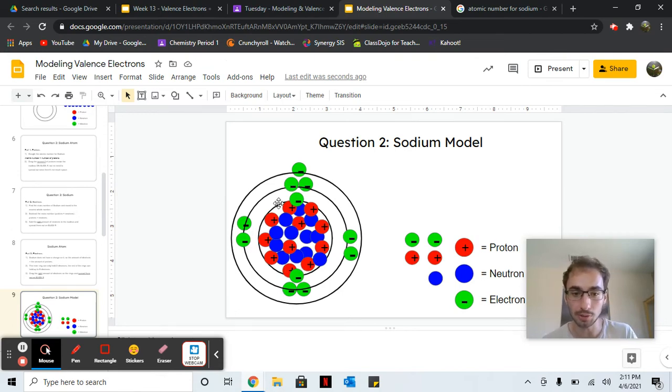You can double check: two, four, six, eight, ten, eleven. So that is your sodium. Notice sodium only has one electron in the outside ring.